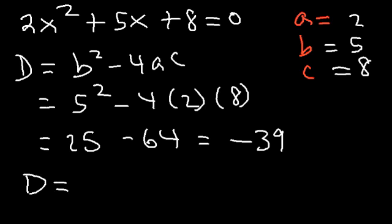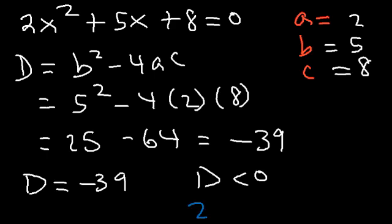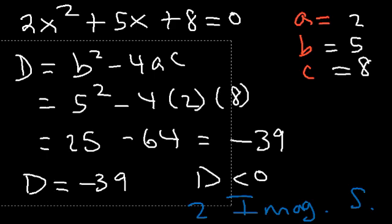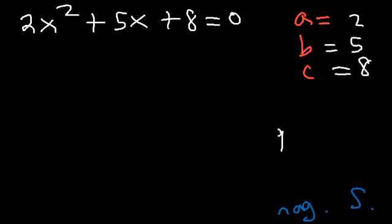The discriminant is negative, which means it's less than 0. Whenever it's less than 0, you're going to have two imaginary solutions. Now let's prove that this is the case by using the quadratic formula to show we're going to get two imaginary solutions.